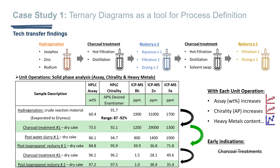For each reslurry and charcoal treatment, the assay and chiral purity increased. However, when we tracked heavy metal content throughout, neither of the charcoal treatments were beneficial for purging these impurities. The water and IPA reslurries were shown to be far more effective, signaling early on that charcoal treatments were ineffective and could potentially be removed from the process.